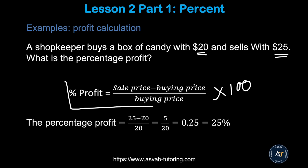Plug in the values: (25 − 20) / 20 × 100 = 5/20 × 100. Simplify 5/20 to 1/4, which equals 0.25. Move two decimal places to convert to percent: that gives you 25 percent profit. Learn this concept — it is very important.